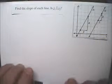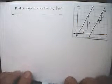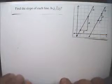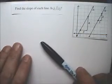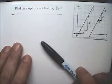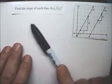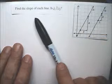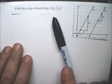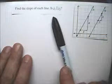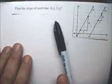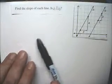Hello, this is perpendicular and parallel lines — parallel lines in the coordinate plane, example 3. Find the slope of each line and determine if J1 is parallel to J2.